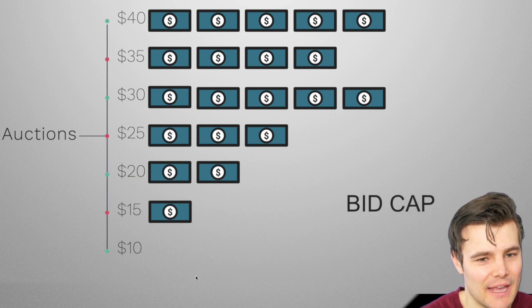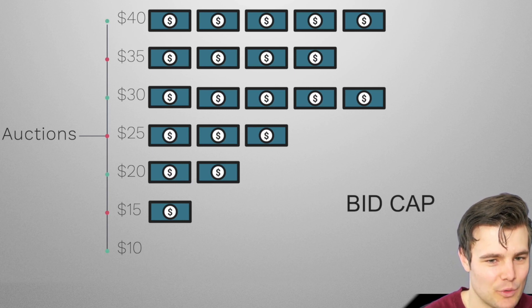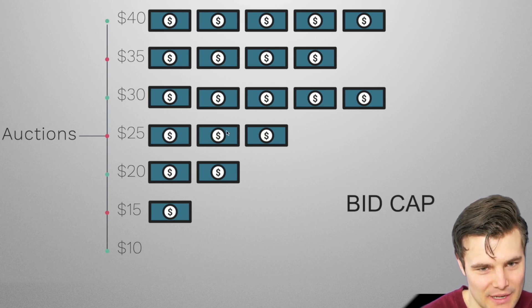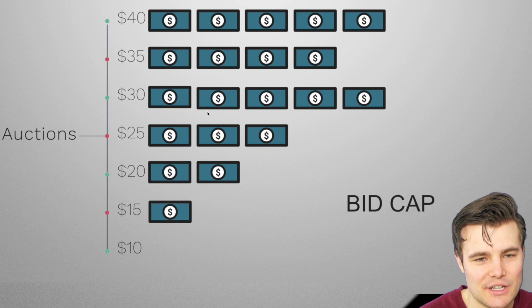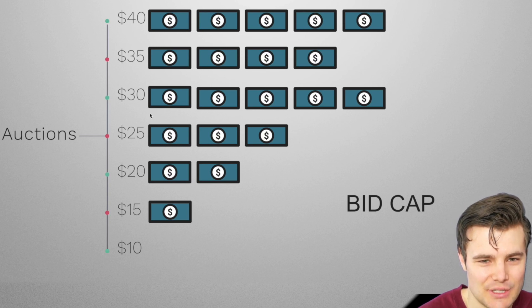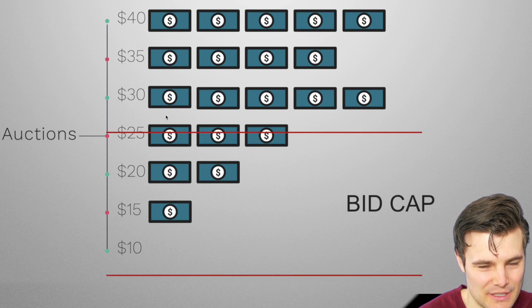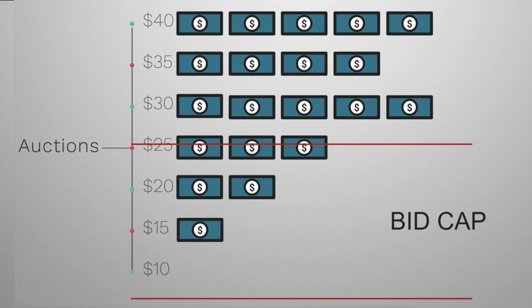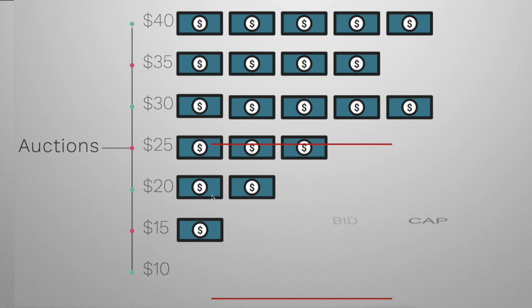Next up is bid cap. You set the exact amount you're willing to bid — in this example, $25. With bid cap, you won't enter any auctions that are more expensive than that amount, even a little bit more. The benefit is you can really control how much you pay to acquire a customer. The downside is sometimes you get very low volume or very low spend for the day — it's not uncommon to spend $0 for the day because there are simply no cheap auctions available.